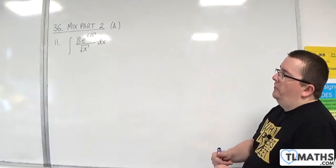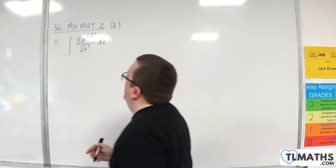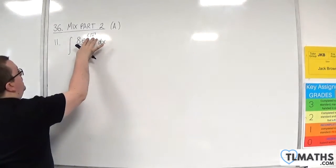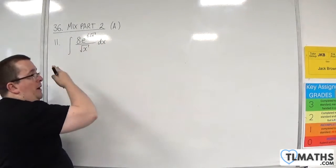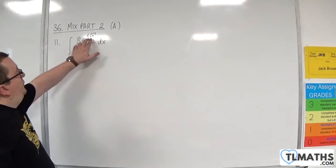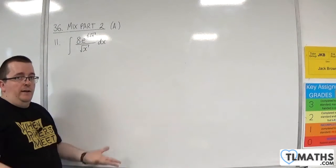This is one of those where you should check whether the interior function differentiates to something that you've got out the front. Now we've got 6 root x there, which is 6x to the half.